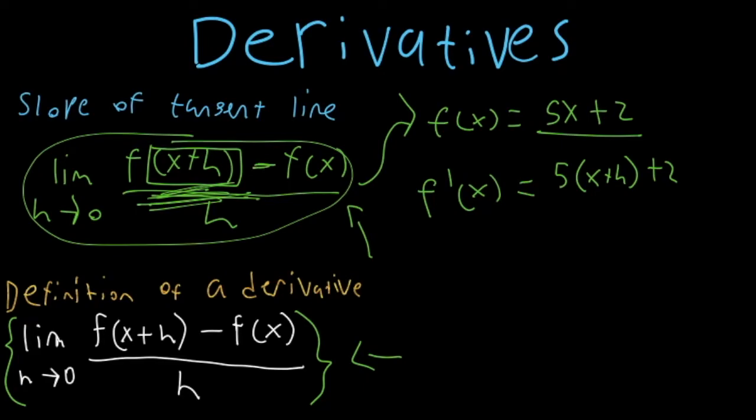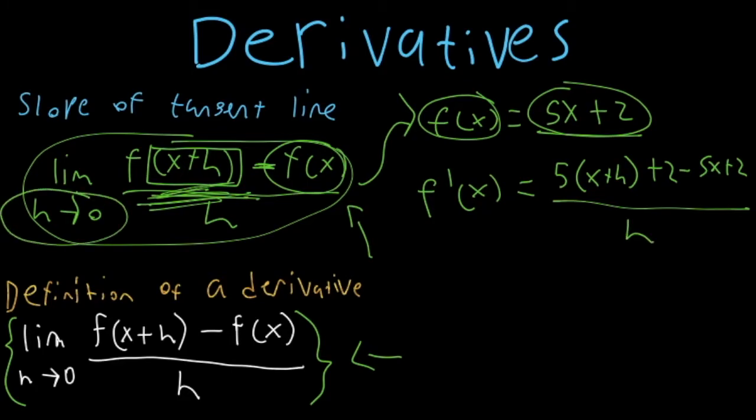And now you're going to subtract off the entire function value. And we have our function value right here. So we're going to subtract off 5x plus 2. That's our function value all over h. And we're also going to have the limit as h approaches 0. So the limit as h approaches 0.